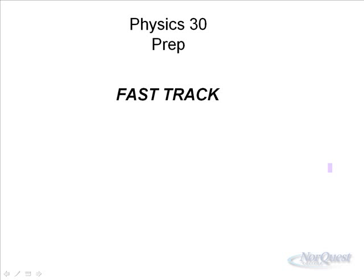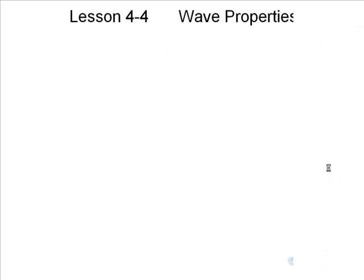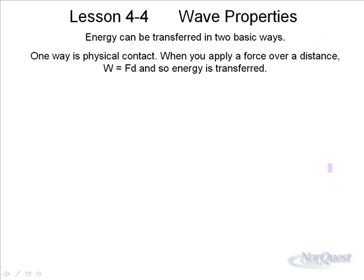Welcome to Physics 30 Prep Fast Track Lesson 4-4: Wave Properties. Energy can be transferred in two basic ways. One way is by physical contact, when you actually apply a force by touching an object over a distance. Since force times distance equals work, any time work is done, energy is transferred — so that's one way to transfer energy: by physical contact.